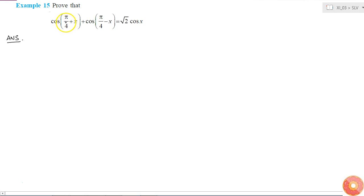If I can use the trigonometric identity cos a plus b is equal to cos a into cos b minus sin a into sin b. This is cos a plus b and what is cos a minus b? This is equal to cos a into cos b plus sin a into sin b.